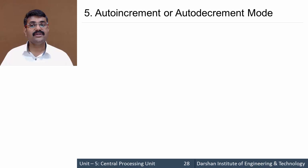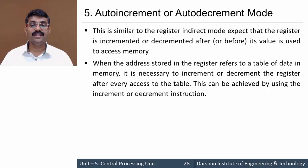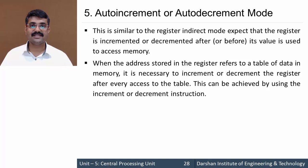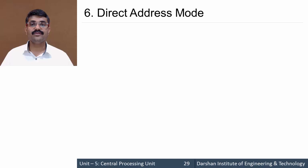Next is auto increment or auto decrement mode. It is similar to register indirect mode, but with an added feature of auto incrementing or auto decrementing. When referring to a table — an array of data in memory — we need to traverse address locations. Since we access data row-wise in a table, we need to increment our pointer. The register works as a pointer register, so register indirect mode plus auto increment or decrement facility becomes auto increment/decrement mode.